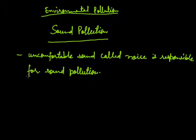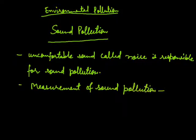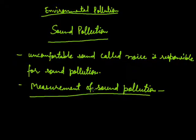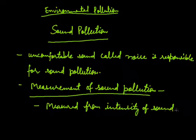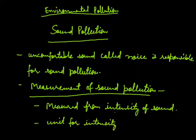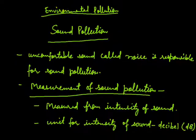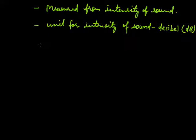Measurement of Sound Pollution. Sound Pollution is measured from the intensity of sound. The unit for measuring the intensity of Sound Pollution is Decibel, represented by small 'd' and capital 'B'. The unit Decibel has been named after the famous scientist Alexander Graham Bell.